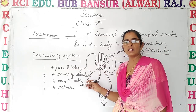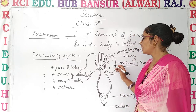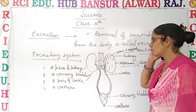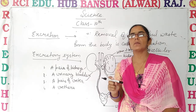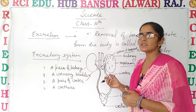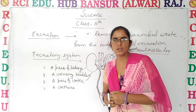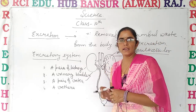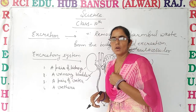The excretory system is mainly made of four parts. The filtering unit is called the nephron, which we will discuss in the next lecture. Like, comment, and share the video, and subscribe also.